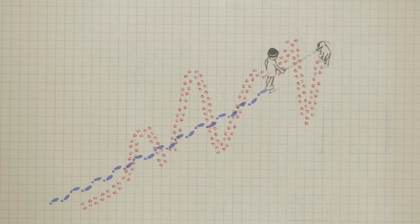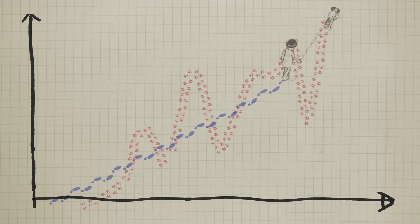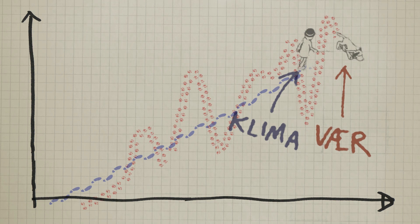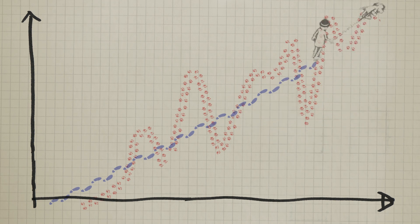The owner is the long-term trend, the dog is the variation around this trend. Or, the owner is the climate, the dog is the weather.